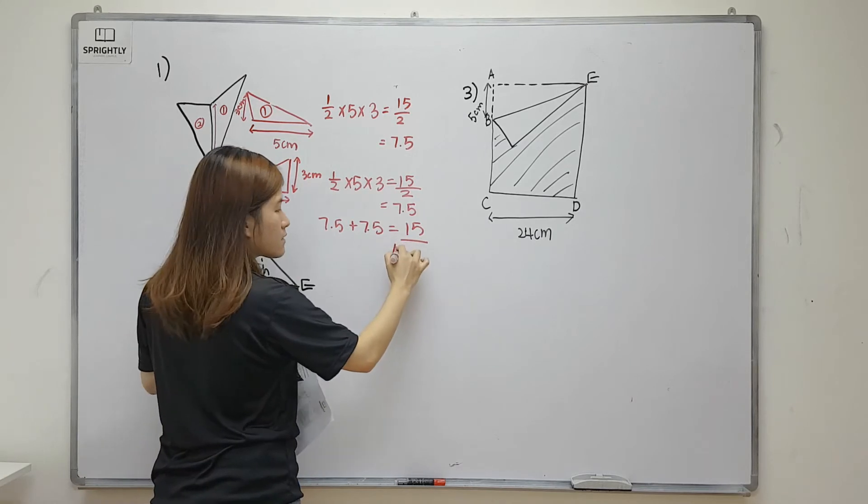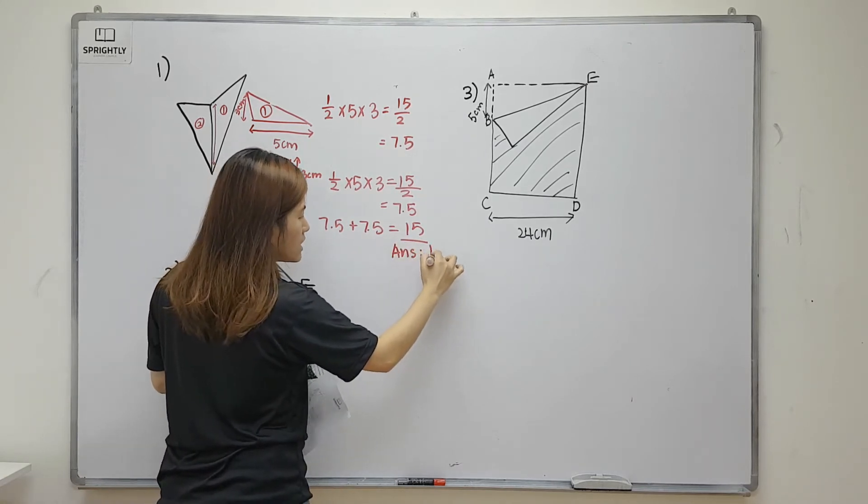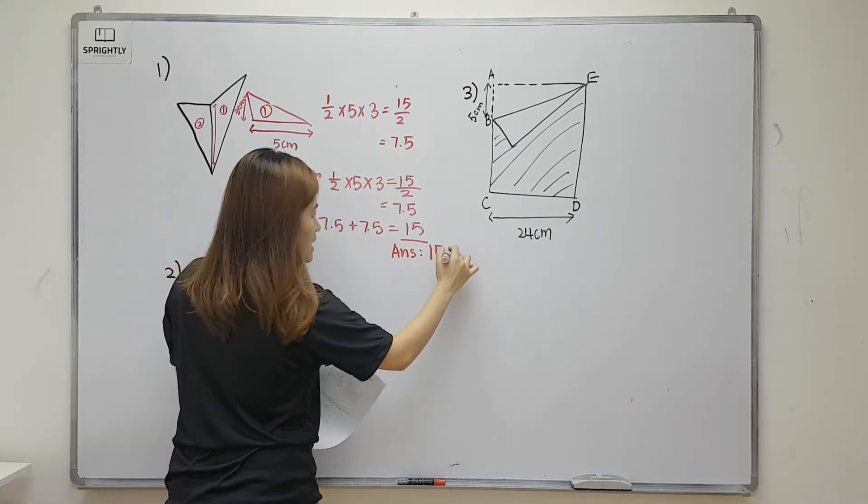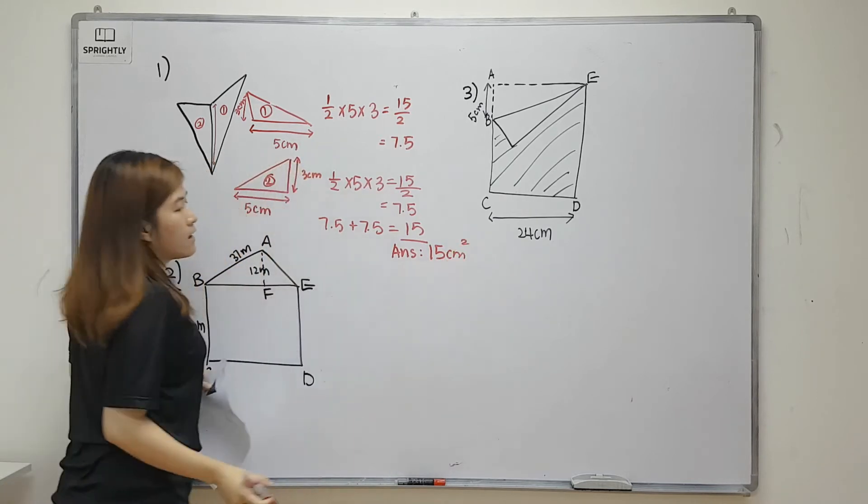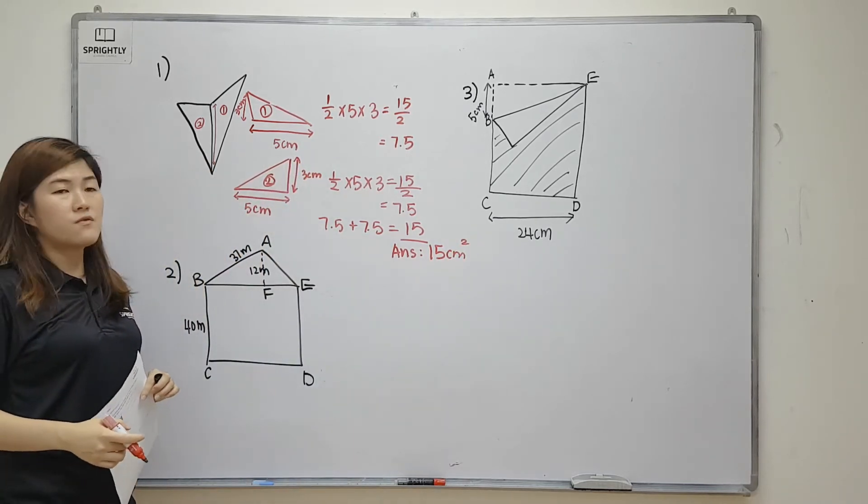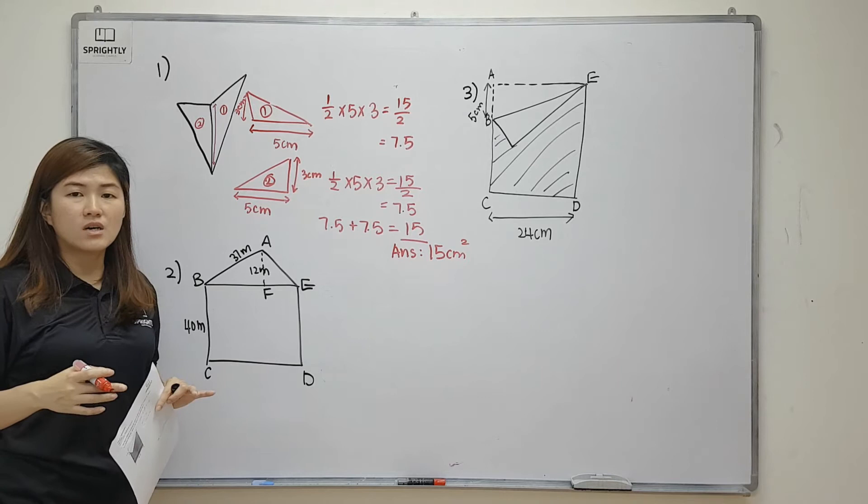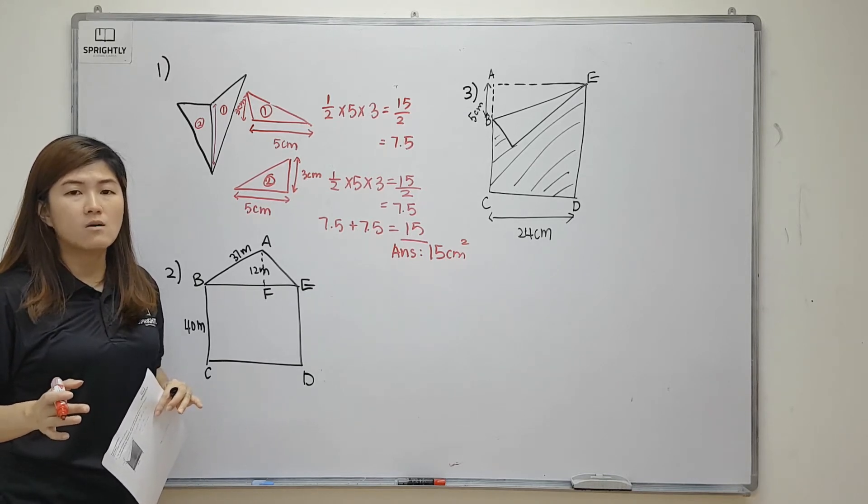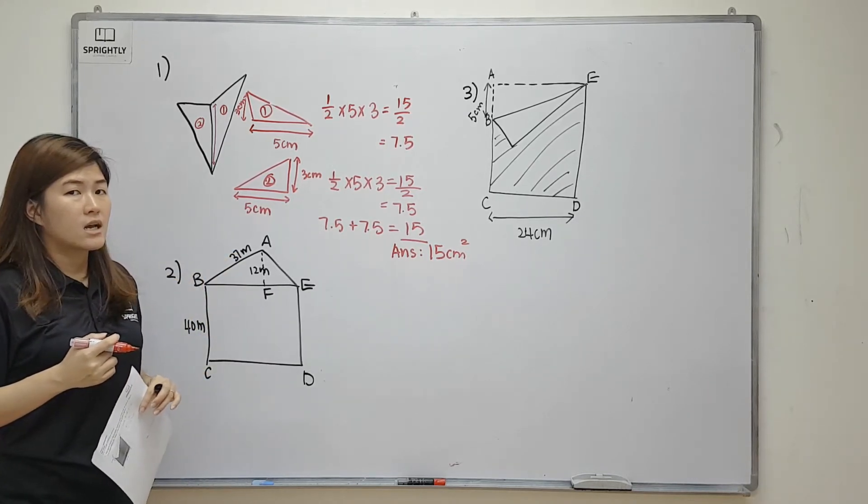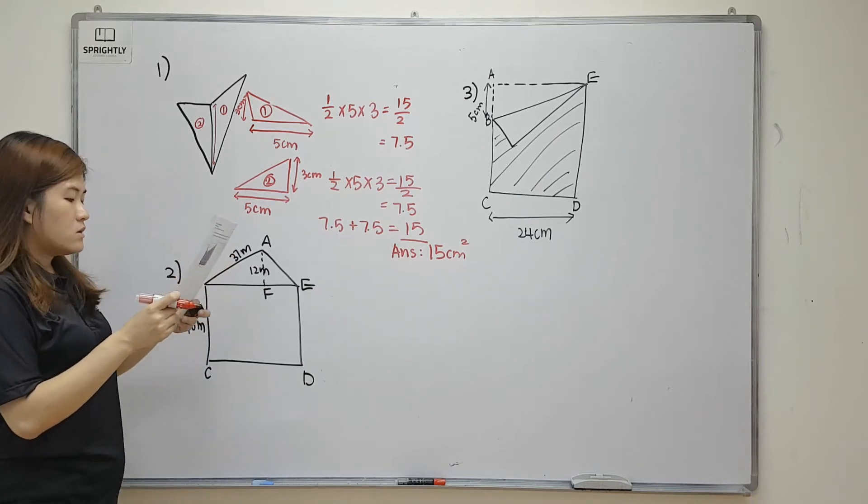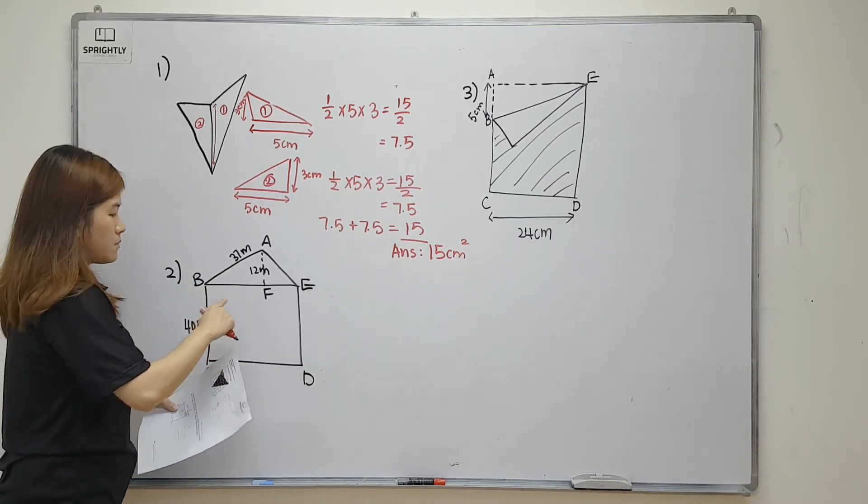Remember on the answer line you will have to write your units - 15 cm squared. If you need time to do your correction, please pause this video now and copy down the corrections. Now let's look at question number two.